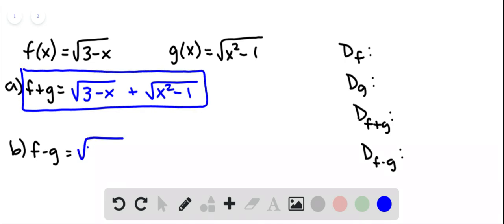f minus g will be the square root of 3 minus x minus the square root of x squared minus 1. Again there's no simplifying to do here.